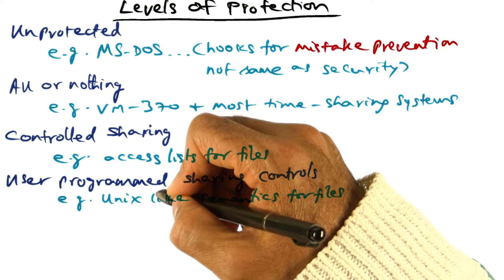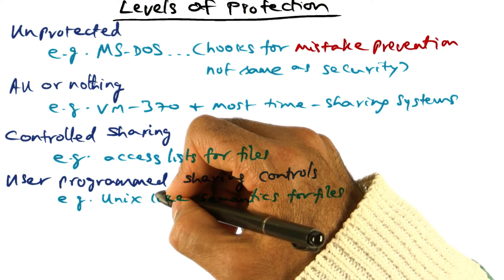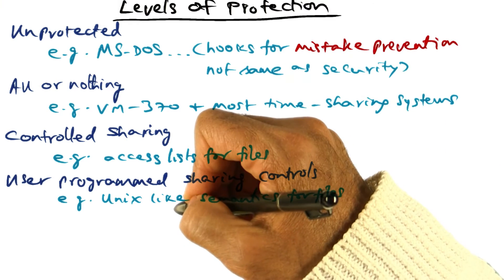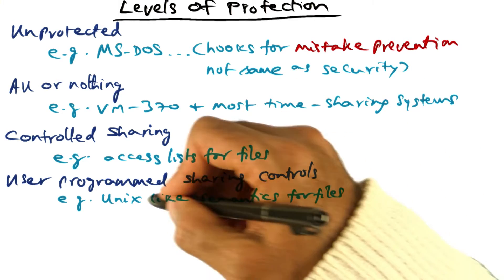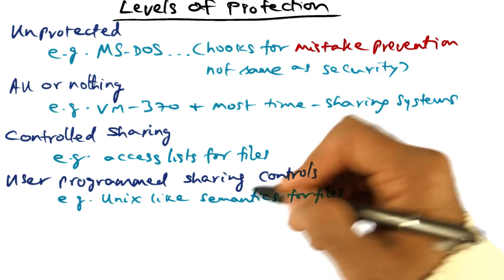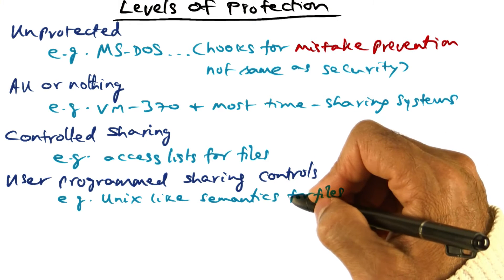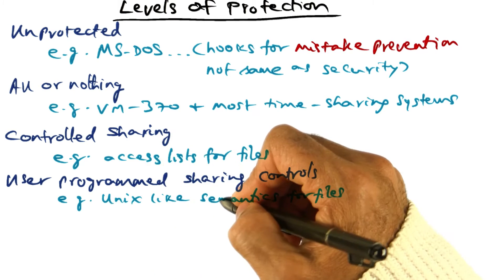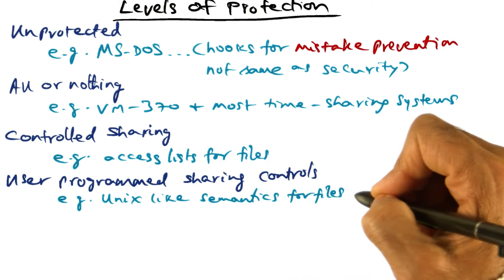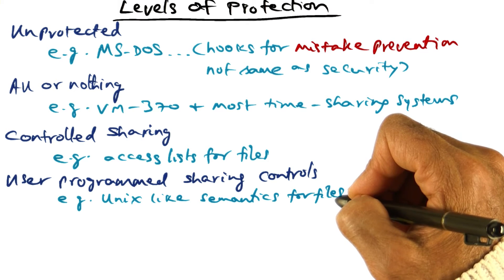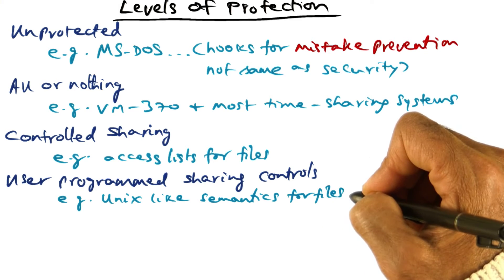Another level of protection is what Saltzer calls user programmed sharing controls. This would be facilities similar to what you find in the Unix file system today, such as being able to associate different access rights for files for different groups of users. In Unix, there are three levels of protection you can associate with a particular file that you create.